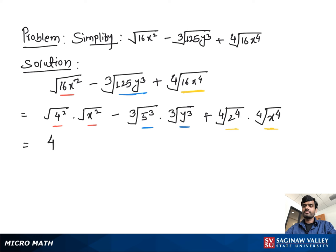Then we get 4 times absolute value of x, minus 5 times y, plus 2 times absolute value of x. Here we add 4 absolute value of x plus 2 absolute value of x, and we get 6 absolute value of x minus 5y.